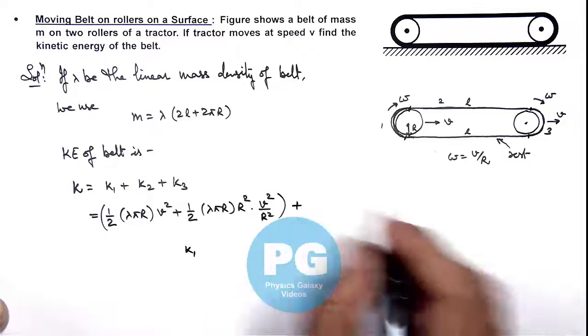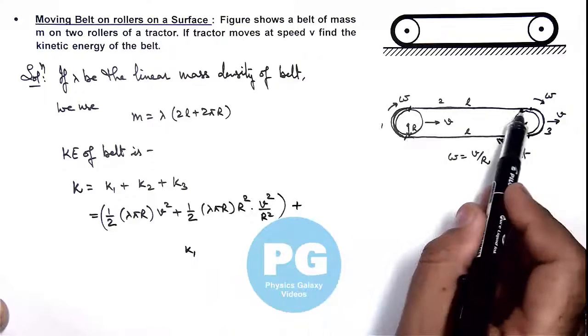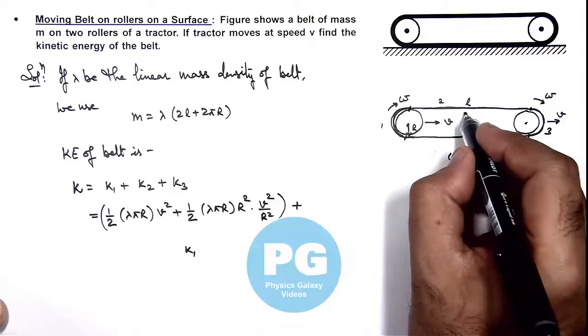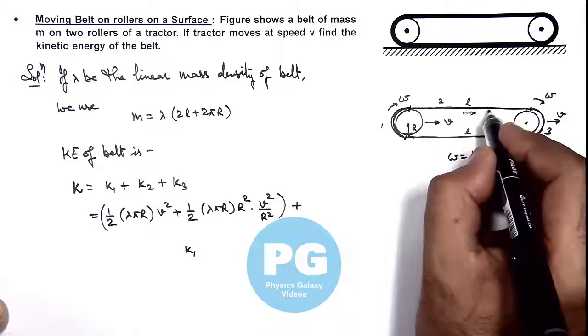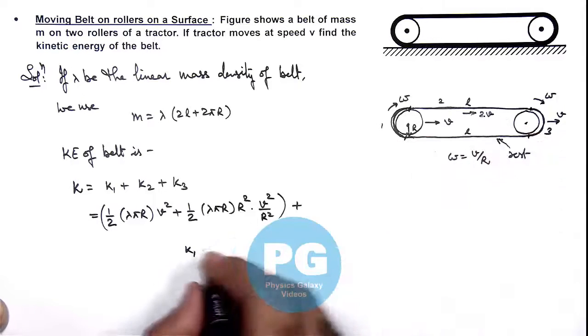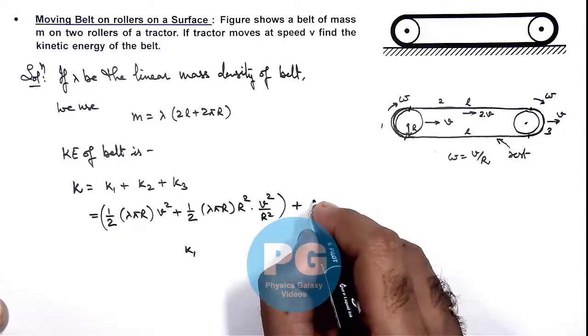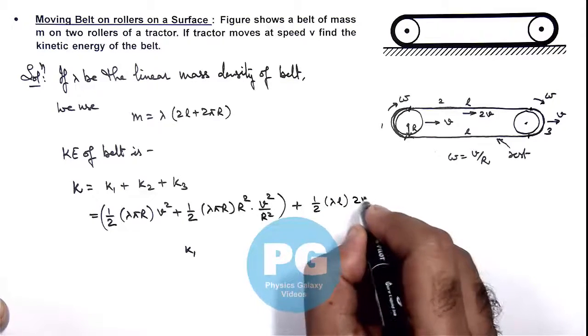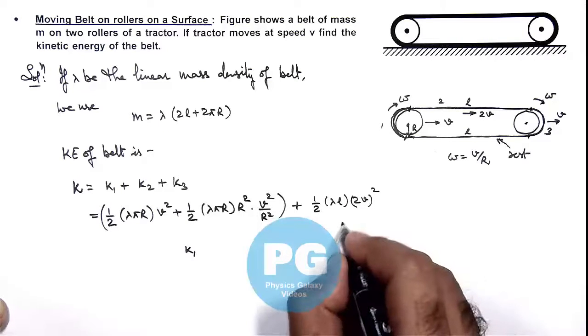Plus for this second part of the belt, we can see the velocity of this topmost point of the belt we can write as 2v. So in this situation, this can be given as half λl multiplied by 2v whole squared, which is K2.